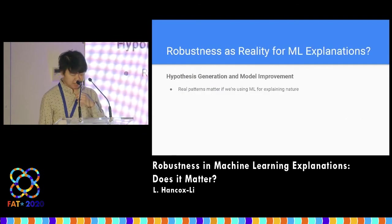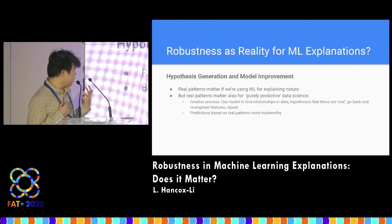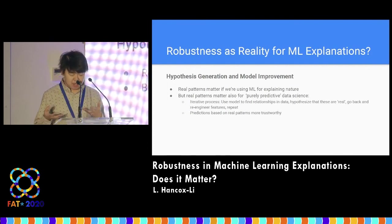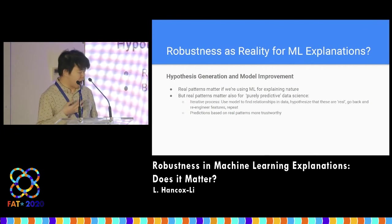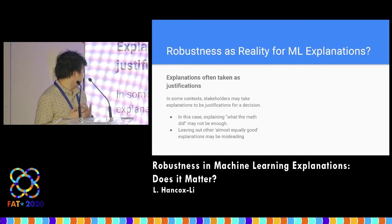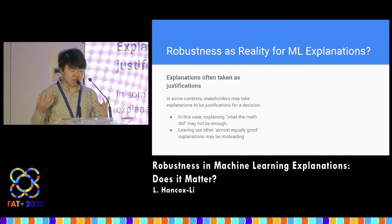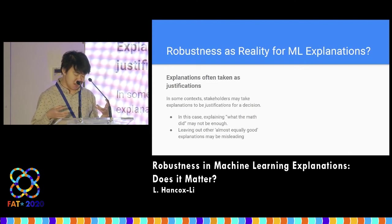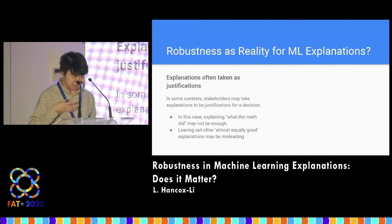So why do we want robust analysis for machine learning explanations? One reason is that if we're grounding our model in real patterns in the world, we're better able to engineer features and we have more trust in the model because we know it reflects something real. That's the hypothesis generation and model improvement rationale. Another reason is that explanations are often used as justifications — when you provide an explanation to a stakeholder, say for a credit decision, the end user expects it not just to explain math but to justify the decision. If that justification includes real-world properties, there's more reason for the stakeholder to trust it.